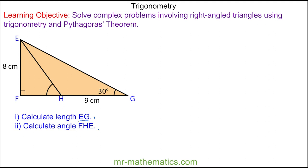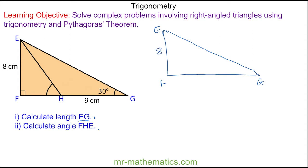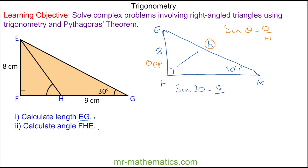To work out the length E to G we're going to use the big right angle triangle E to F to G. We know this length is 8 and we know the angle is 30 degrees, and we've been asked to work out the hypotenuse. So again we'll label the sides — the 8 is opposite the angle and we've been asked to work out the hypotenuse. So we're going to use sine: the sine of the angle theta is the opposite divided by the hypotenuse. So sine of 30 is equal to 8 divided by h.